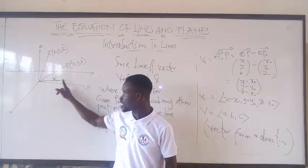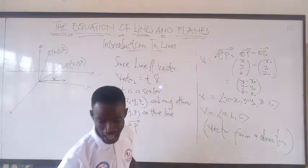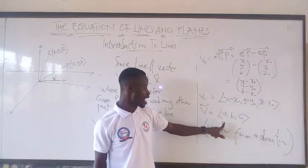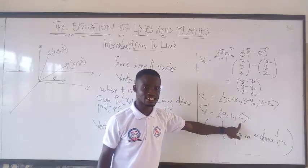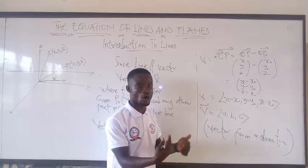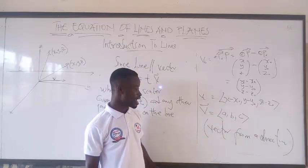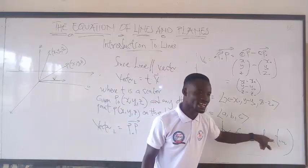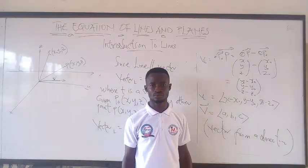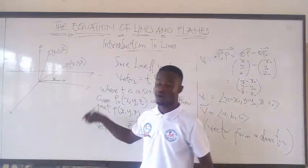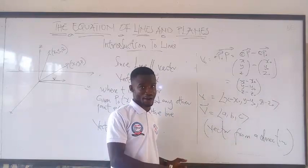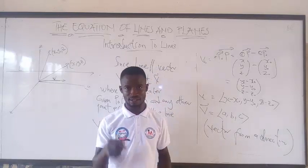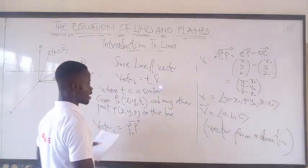Now let's define this in the Cartesian way. The direction vector V here is (A, B, C). This A, B, and C represents the components of the direction vector V. Be careful — this vector is a direction vector. I will be giving you some keywords; you have to jot them down.